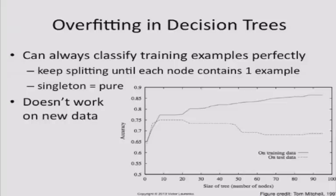If you have a classifier as a function, and you feed in two identical inputs, you always get an identical output. It's not stochastic, it's deterministic. So it's true for every classifier. But that's a degenerate example. Assuming that doesn't happen, what the decision tree will do is it will keep splitting the data until every subset is perfect.